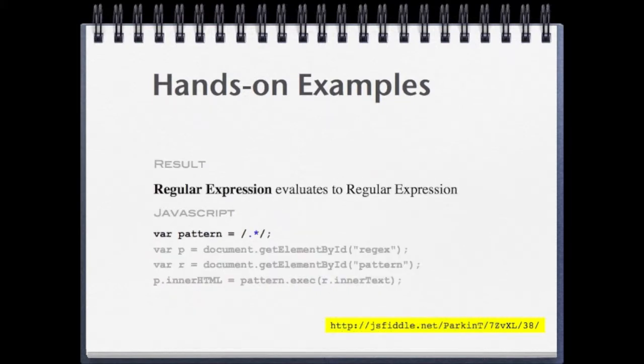Remember those wild cards we mentioned earlier? The dot represents any character. And the splat, or star, is used to indicate any quantity. This means the simplest of regular expressions is dot splat. This will match any single character any number of times, including zero times. That's not very useful, but it offers us a starting point.